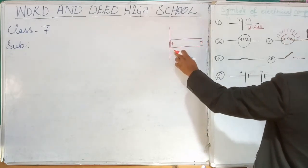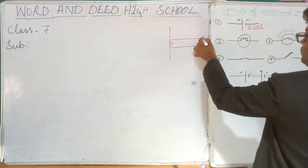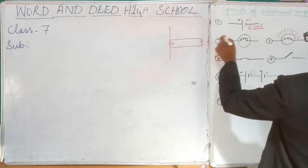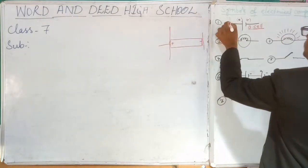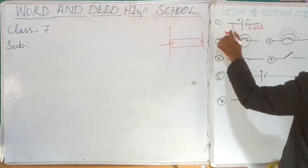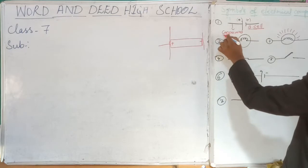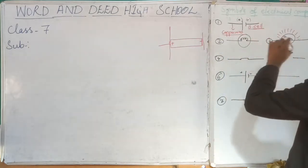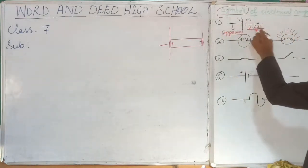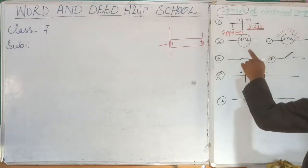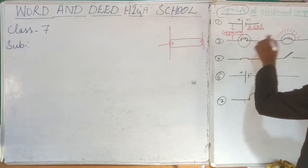So the positive side of the battery cell is represented by a long standing line, and the negative terminal is represented by a short standing line. The lines connecting the components are copper wires. This is the symbol of the electrical component called battery cell. Now let us look at the second symbol — this is copper wire, and this is also copper wire.